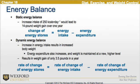Moving on to energy balance, in a static energy balance, an increased intake of 250 kilocalories per day would lead to a 14-pound weight gain over one year. In a dynamic energy balance, an increase in energy intake results in an increase in body weight where energy expenditure also increases, and the weight is maintained at a new, higher level, resulting in a weight gain of only 3.5 pounds per year. The change in energy store in static energy balance equals energy intake minus energy expenditure; in dynamic energy balance, the rate of change of energy store equals the rate of change in energy intake minus the rate of change of energy expenditure.